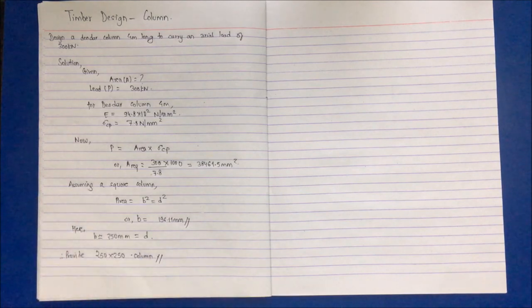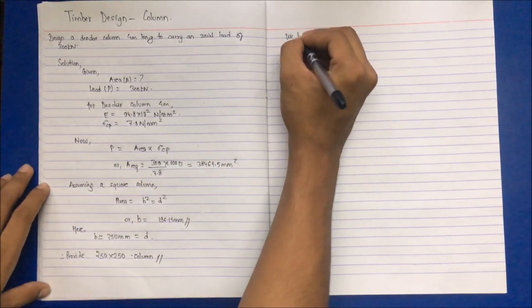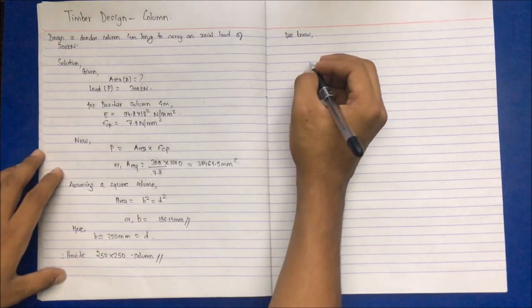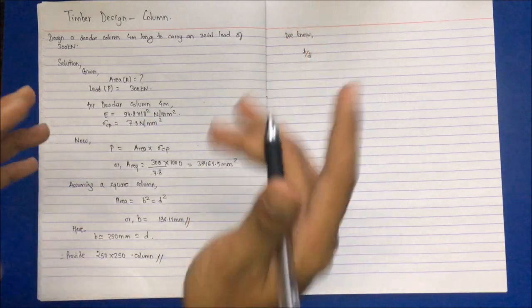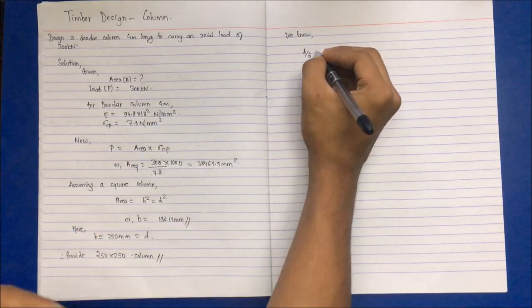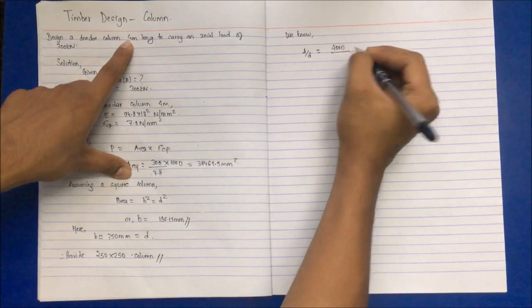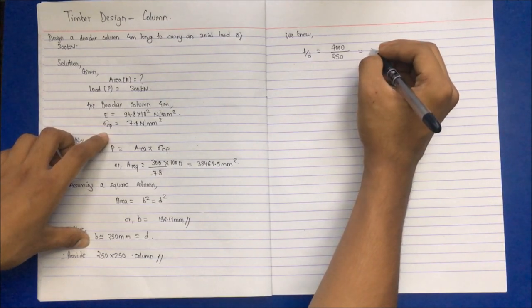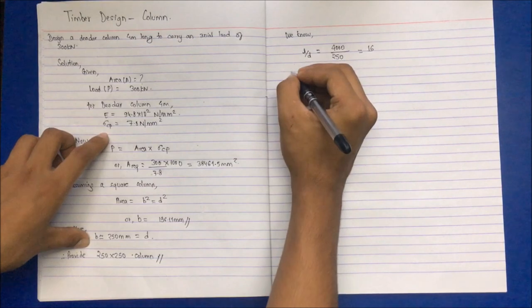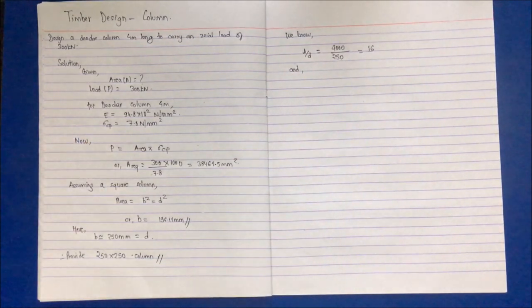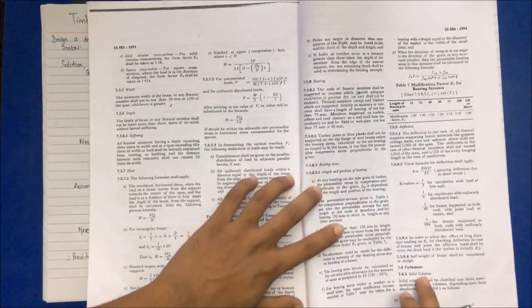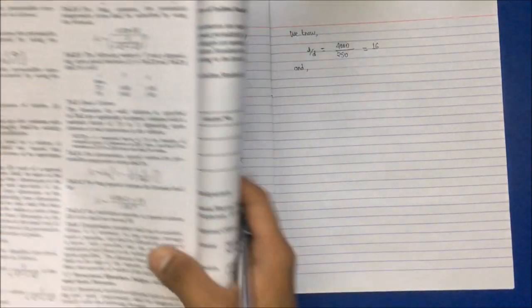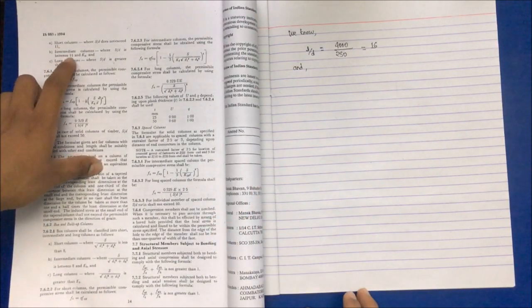Now we have to check whether this is a short, intermediate, or long column. To check, we need the ratio L by D, where L is the length. L by D equals 4000 by 250, which gives 16. If you check the condition for solid short column, S by D should not exceed 11. Our value is 16, so it doesn't satisfy the short column condition.